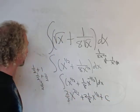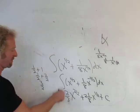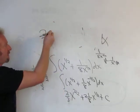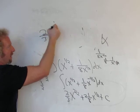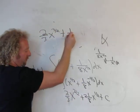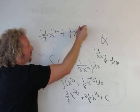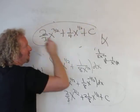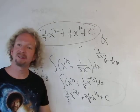2 over 8 is really 1 fourth. So the final answer to this problem is going to be 2 thirds x to the 3 halves, plus 1 fourth x to the 1 half. And don't forget the philosophy, C is called your arbitrary constant of integration. That's it.